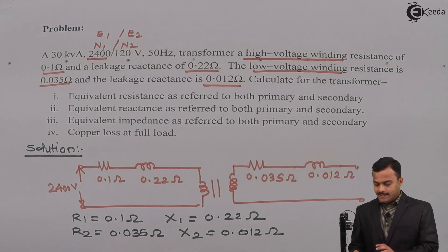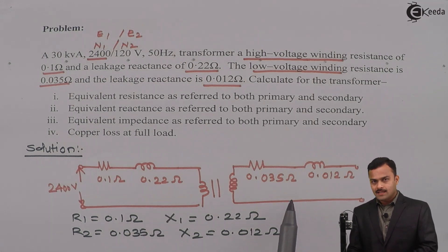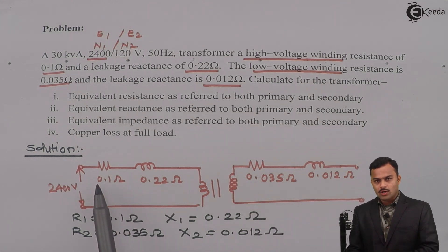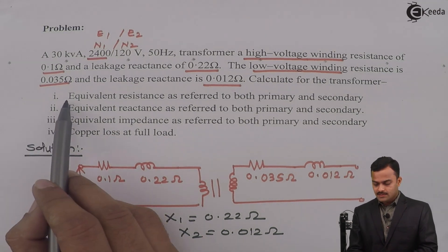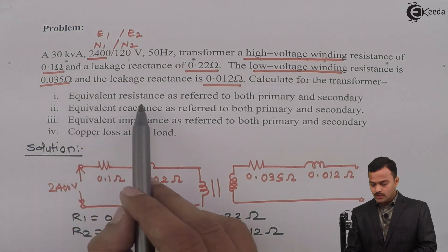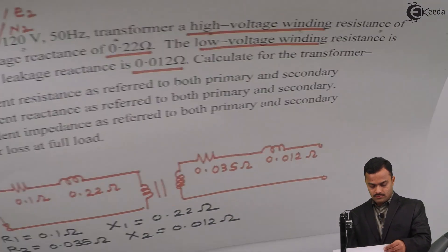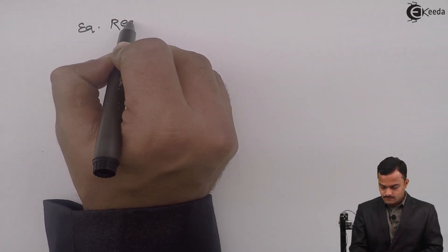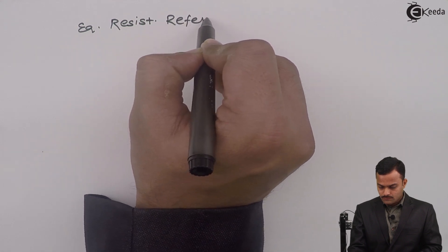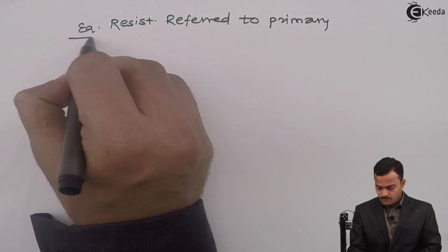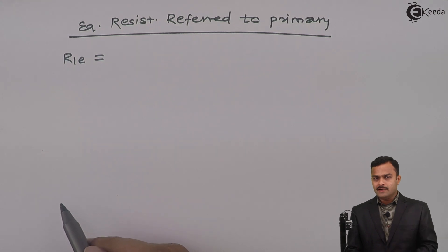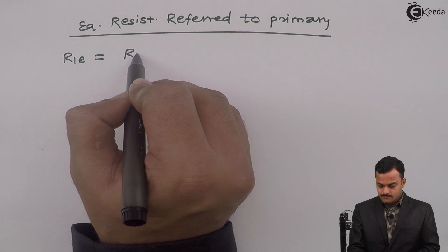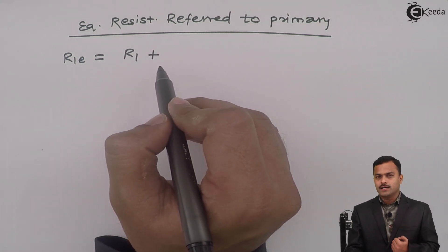Instead of having two separate circuits, we should have only one circuit — either all elements referred to the primary side or all referred to the secondary side. That is what is called referred to primary and referred to secondary. Let us deal with the first part: equivalent resistance. For equivalent resistance referred to primary, denoted R1E, the primary resistance remains as it is, and the secondary resistance is referred to the primary side.